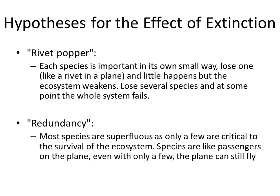Hypotheses for the effect of extinction. The rivet popper theory holds that each species is important in its own small way. We lose one of them, like a rivet on a plane, and a little happens, but the ecosystem weakens. We lose several species, and at some point the whole system fails.